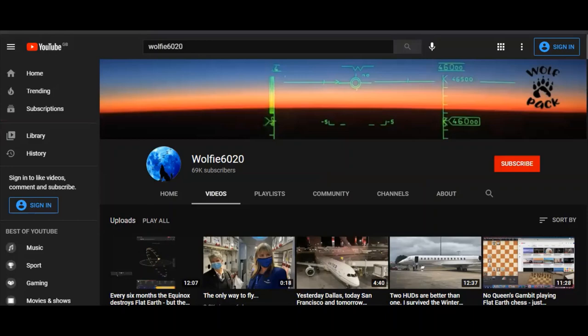Then you have idiots like Wolfie6020 who has 29 equinox related videos on his channel. Now I used to engage with this idiot when he first came on the flat earth scene. I would leave comments on his videos and debunk his videos, and so he couldn't take it so he blocked me. He banned me from his channel.